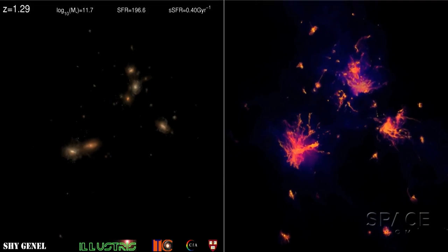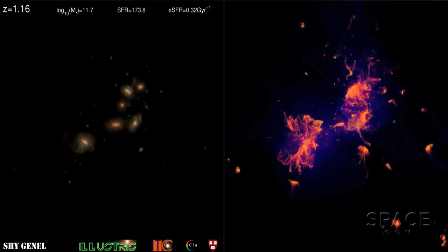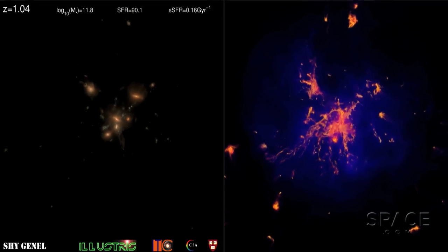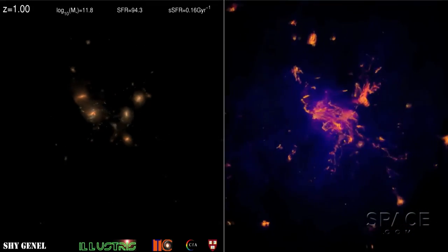Here, we watch some of the earliest galaxies in swirling interaction over billions of years. The view in normal starlight is on the left. But on the right, we can now watch the gas density of the same events.